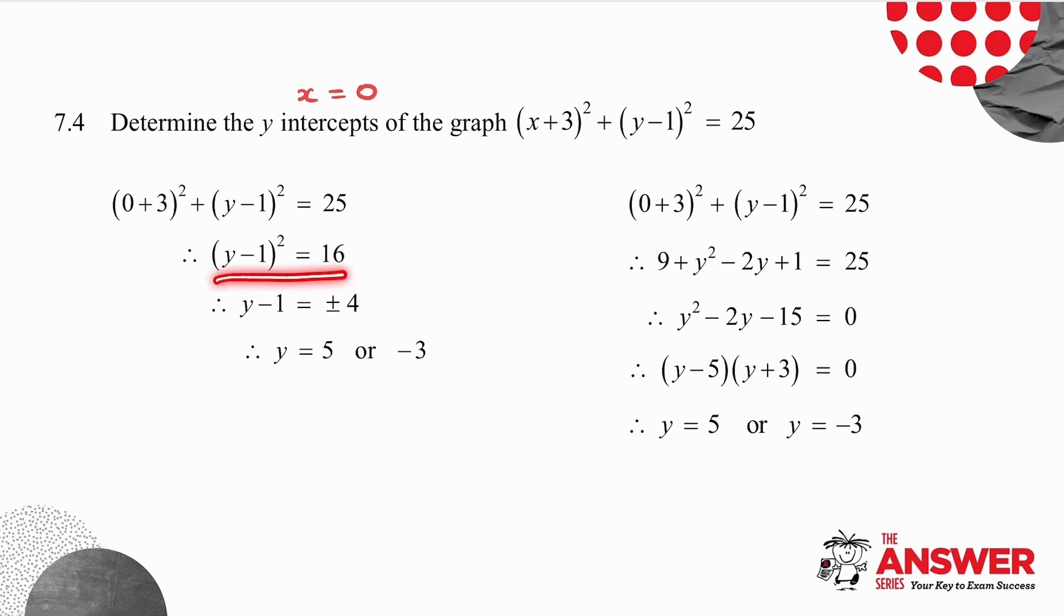Take the square root on both sides. Be very careful, because when you do, do not forget you need plus minus 4. So y is equal to 1 plus 4, or y is equal to 1 minus 4. Alternatively, make x 0, multiply all your brackets out, set up the quadratic equation, factorize, and there are your two answers.